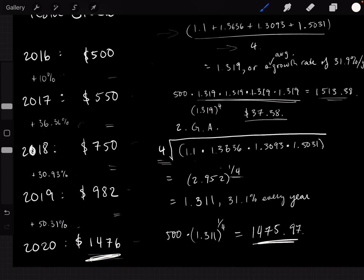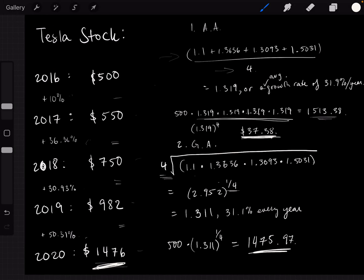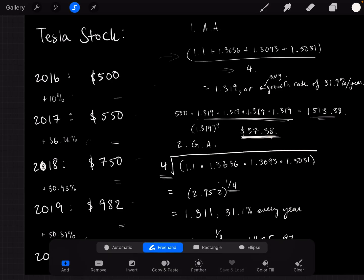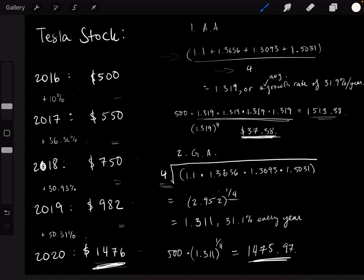Compare that with the $37 that the arithmetic average told us the final value would be. So this is why the geometric average is something that you should be using when you are calculating the average value of something that changes through time, rather than the arithmetic average. So thank you so much to Mark Spitznagel for explaining this to us. Hope this makes things a bit clearer as we go through the book. Have a great day. Thank you.